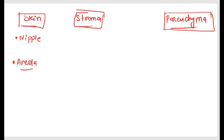Stroma consists of the supporting framework for the breast. It consists of connective tissue and fats. Many connective tissue fibers are joined like ligaments — such as the suspensory ligament of Cooper. These are the condensed form of connective tissue which maintain the protuberance of the breast and hold the breast in position.